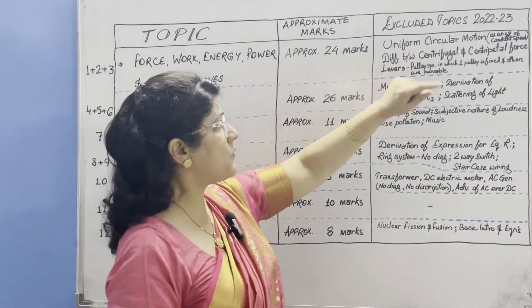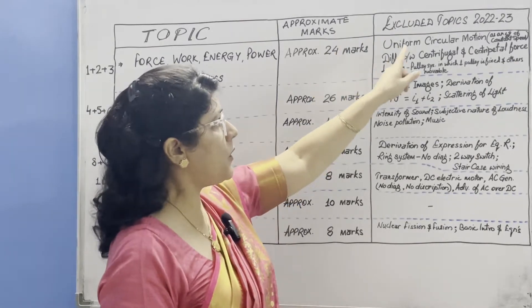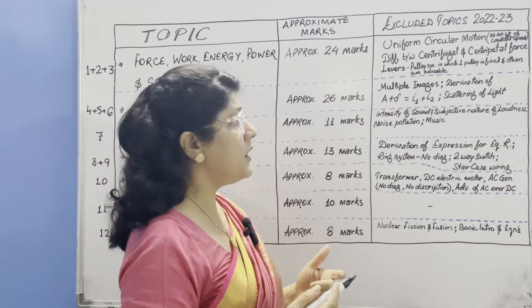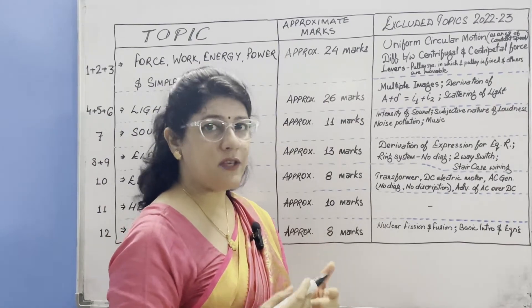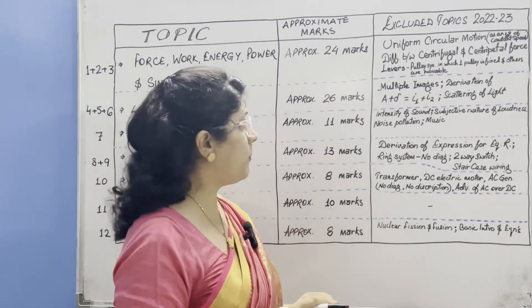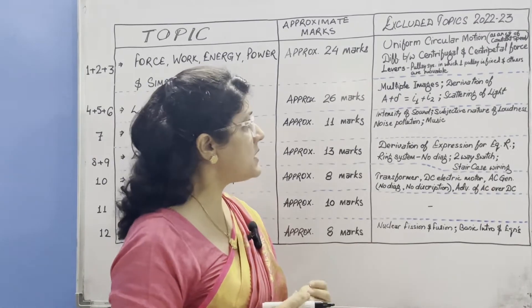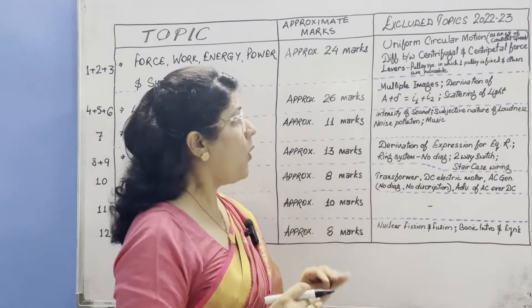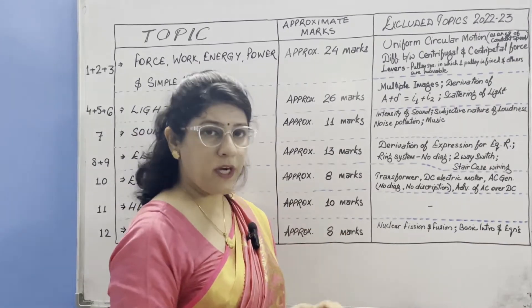Excluded topics from this portion are uniform circular motion as an example of constant speed, difference between centripetal and centrifugal force, and levers whole topic other than pulley system with fixed and movable pulleys. All these topics are excluded from this unit.